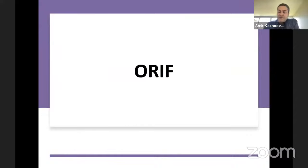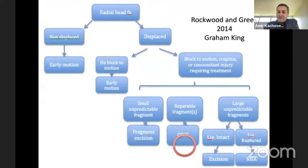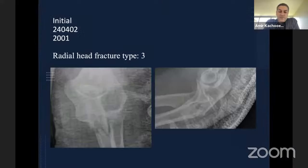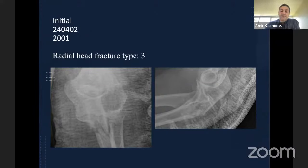The other treatment for radial head fracture is open reduction internal fixation. When can we use ORIF? It is recommended when we have a displaced fracture with a block in motion and we need surgery. If the fragments are repairable, it is recommended to perform fixation. However, I have seen many complications with open reduction when patient selection is not appropriate.